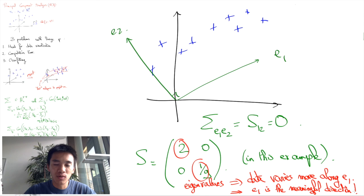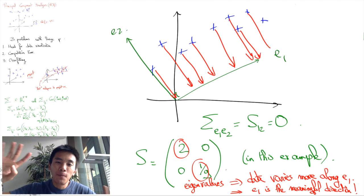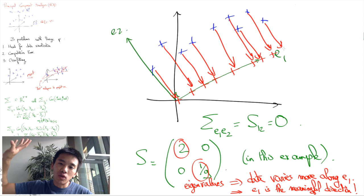It then makes sense to ignore the other directions, especially the ones associated with very small values of the eigenvalues. So typically, PCA will project the full p-dimensional space onto a smaller k-dimensional space.